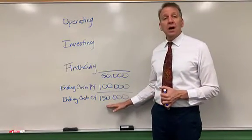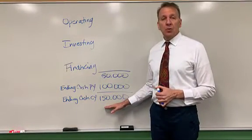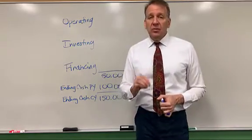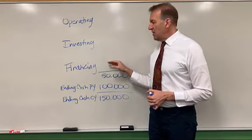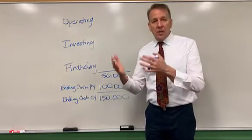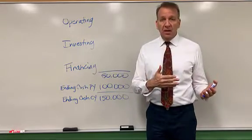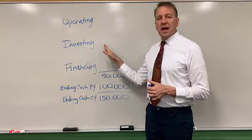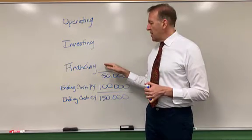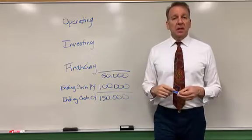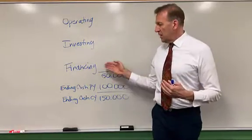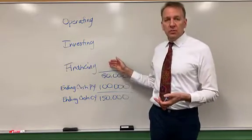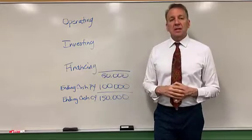This is what you would see on your ending balance sheet for your cash. When we do an indirect cash flow statement, the investing section and the financing section don't change. Whether you use the direct method or the indirect method, they would look exactly the same. They just show the cash transactions plus or minus in the investing sections and the financing section.